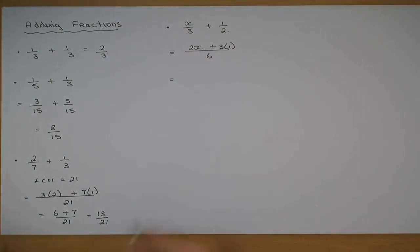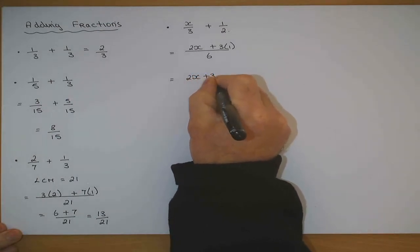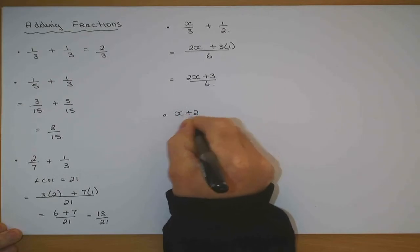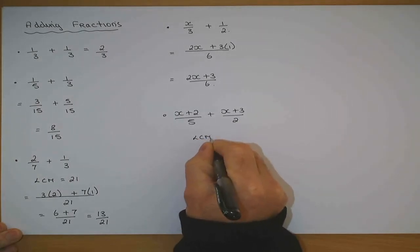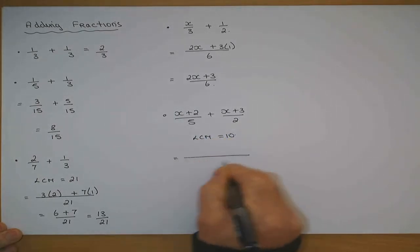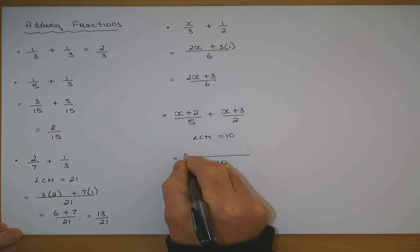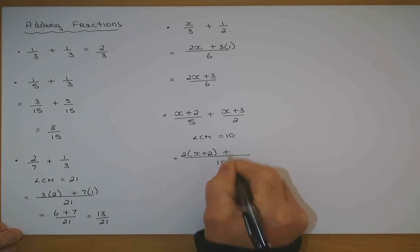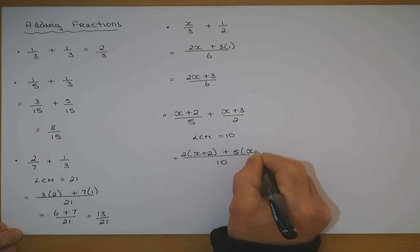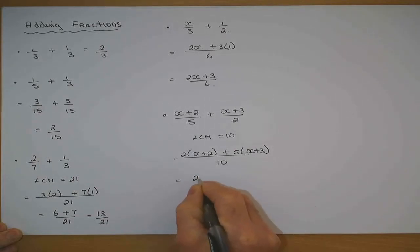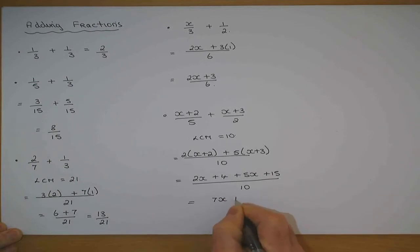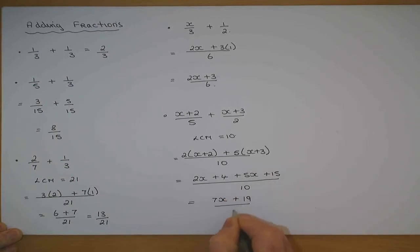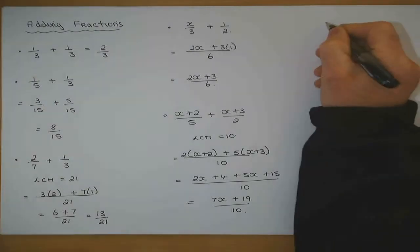So that's 2x plus 3 divided by 6. Now 5x plus 2 over 5 plus x plus 3 over 2. I'd have to get an LCM which is 10, so therefore I put them all over 10. 5 goes into 10 twice the x plus 2, and 2 goes into 10, 5 times the x plus 3. 2 by x and 2 by 2 and 5 by x and 5 by 3 all over 10. Can add like terms 2x and 5x and 4 and 15 over 10.